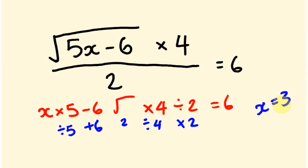Let's substitute x = 3 to verify: 5 × 3 = 15, minus 6 = 9, √9 = 3, times 4 = 12, divided by 2 = 6. Our answer is correct! I was making that one up on the spot, so I was a bit worried, but it worked out fine.